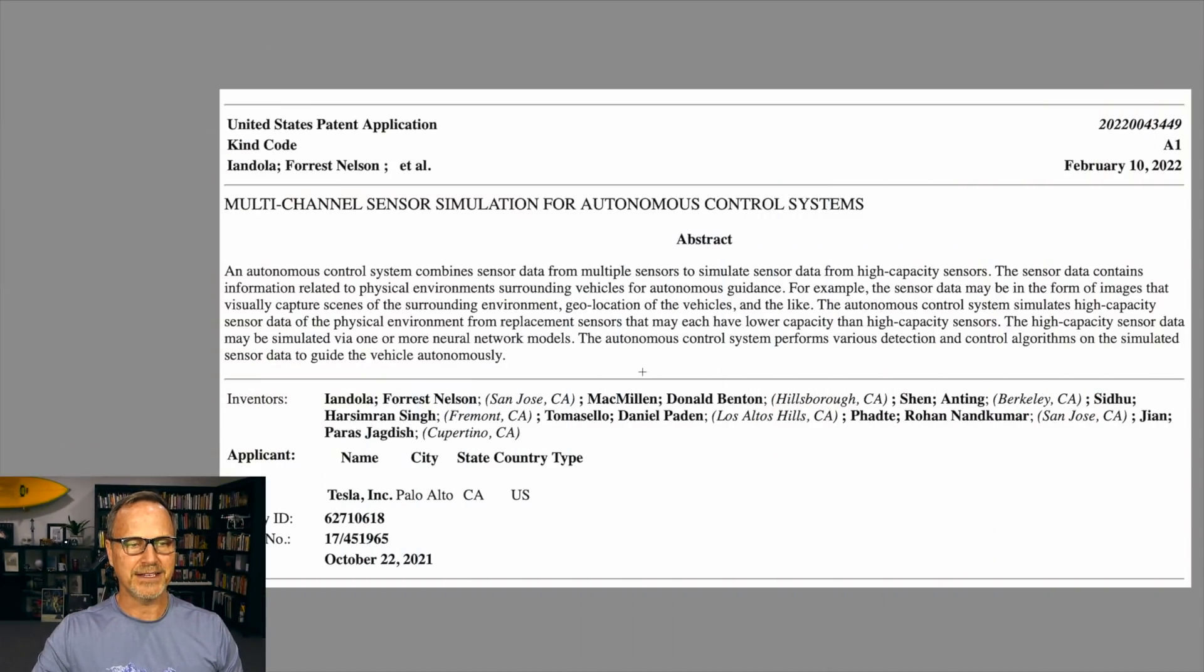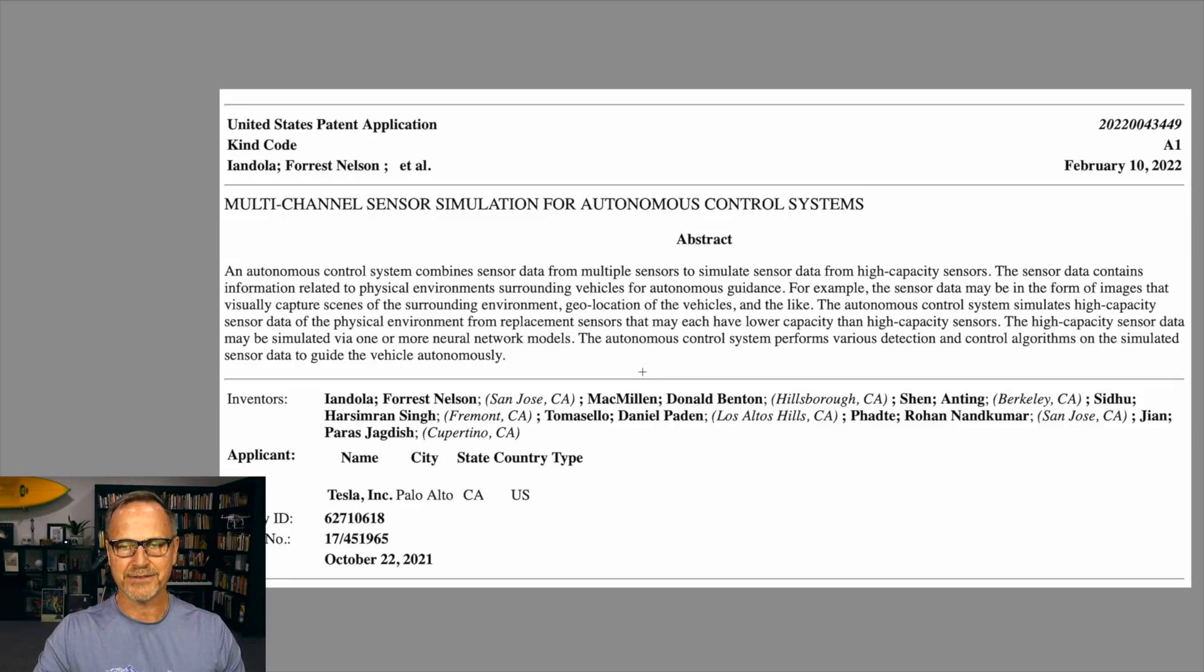The title of the patent is Multi-Channel Sensor Simulation for Autonomous Control Systems. And the beginning of the abstract is, an autonomous control system combines sensor data from multiple sensors to simulate sensor data from high-capacity sensors. And if we go to the summary page, we can see autonomous control systems combine sensor data from multiple sensors.